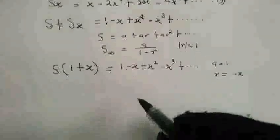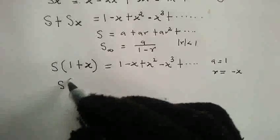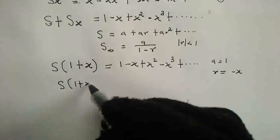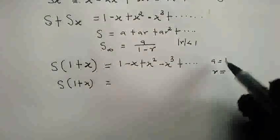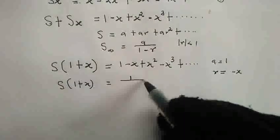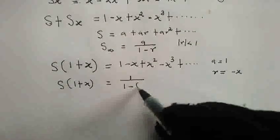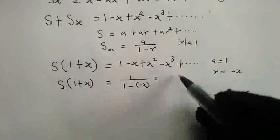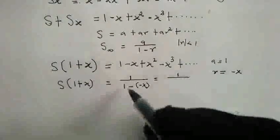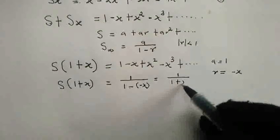So, here, we are obtaining S open bracket 1 plus x close bracket is equal to our first term a, that's 1, all over 1 minus our common ratio which is negative x. So, this is equal to 1 all over, negative sign, negative sign, that is plus, plus x.